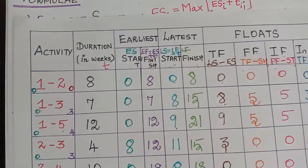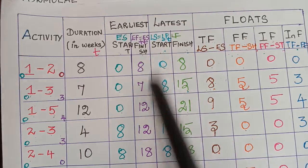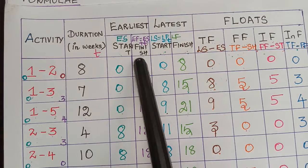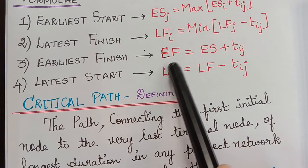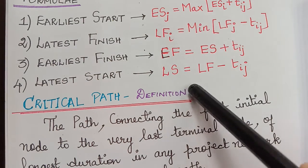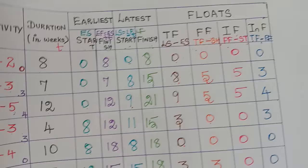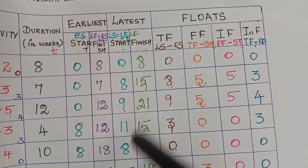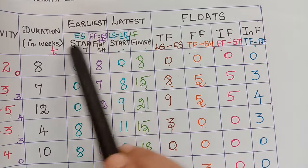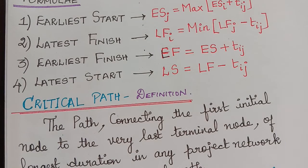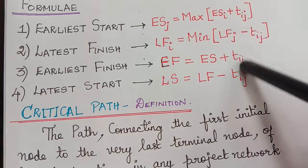We also calculated the earliest start and earliest finish using a tabular column. In that problem, for earliest finish it was earliest start plus the duration T. So the formula is: earliest finish equals earliest start plus the duration. Also, the latest start was equal to latest finish minus TIJ. So latest start is obtained by writing the latest finish first and then subtracting the duration T.